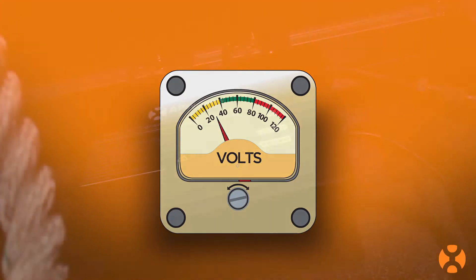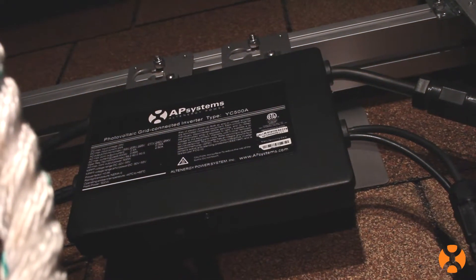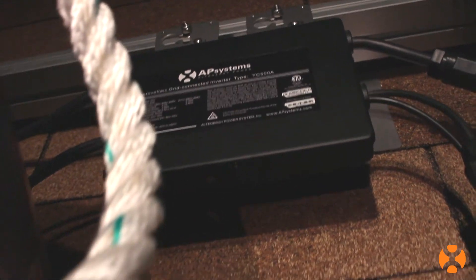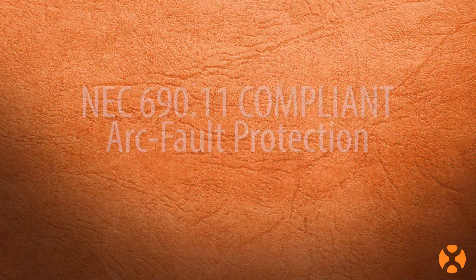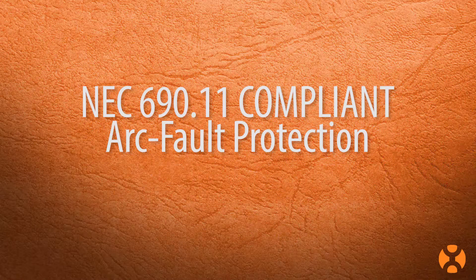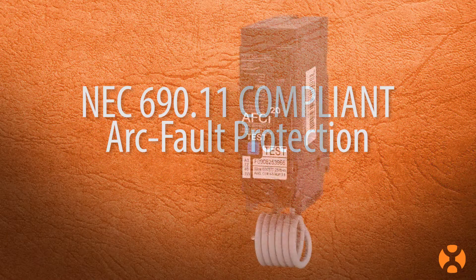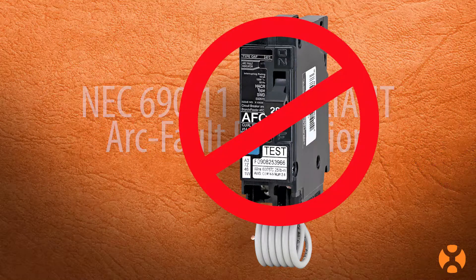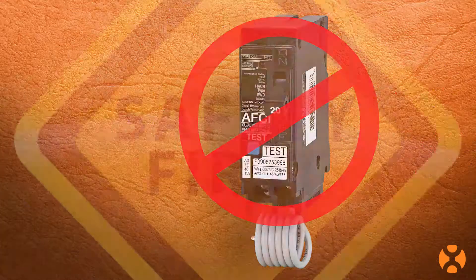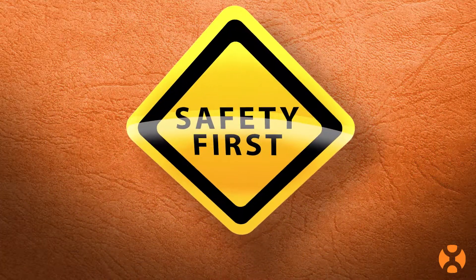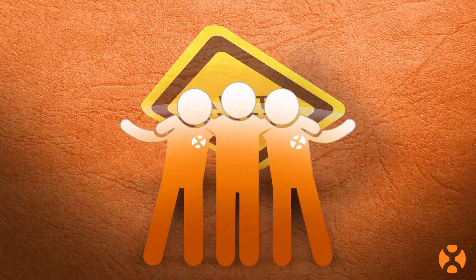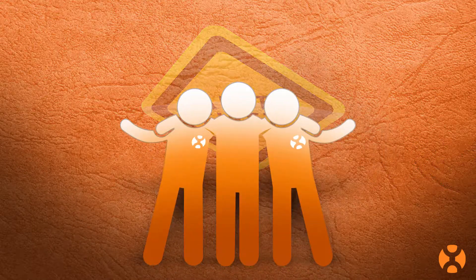Also, that current is protected by the module, further limiting the possibility of exposure. AP Systems microinverters also comply with NEC 690.11 for arc fault protection. Your AP Systems microinverter installation does not require an additional arc fault breaker. Every AP Systems microinverter is designed and built with safety in mind — yours and the customer's.